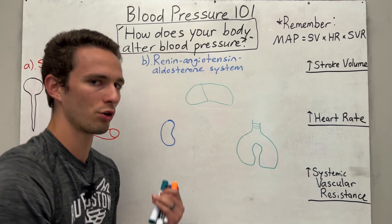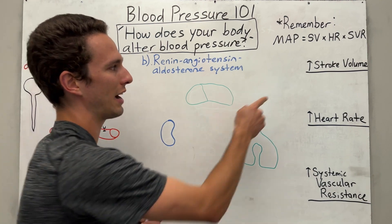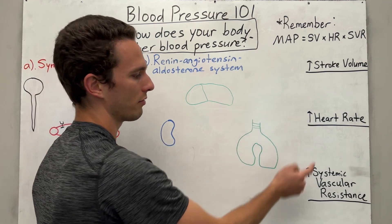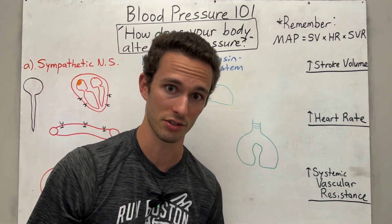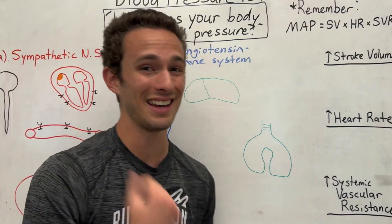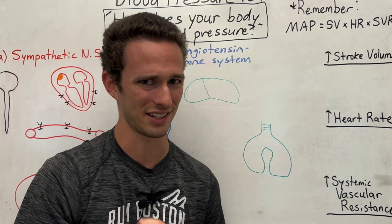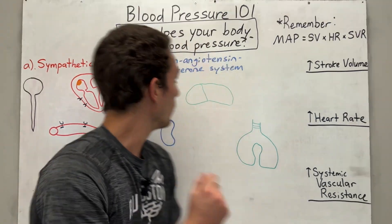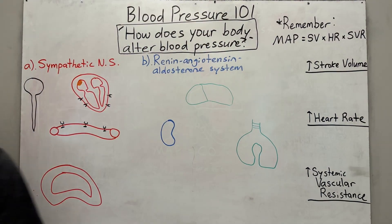So therefore, if we're going to raise our blood pressure in our body, we have to elevate one of those three values or multiple values. At the end, I'll talk about how your body can decrease it a little bit, but it's not very good at it. Let's start with the sympathetic nervous system.